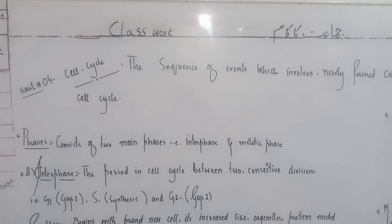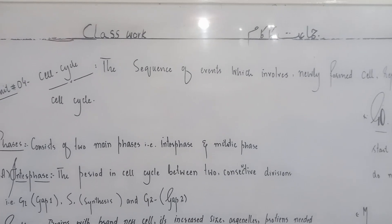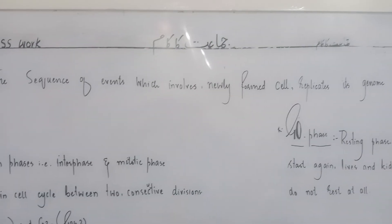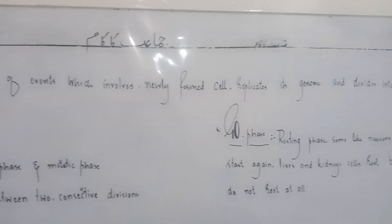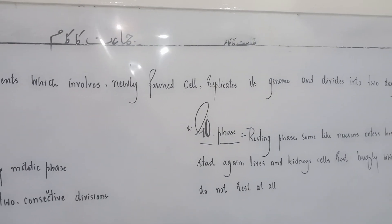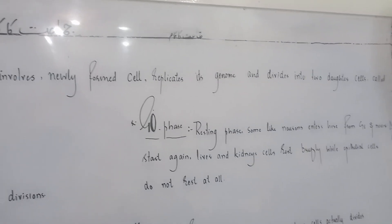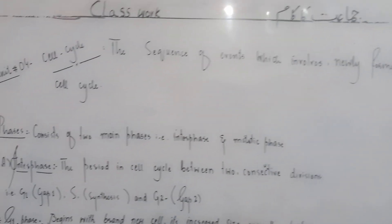Chapter number 4, cell cycle. The sequence of events which involves a newly formed cell replicating its genome and dividing into two daughter cells is called the cell cycle.